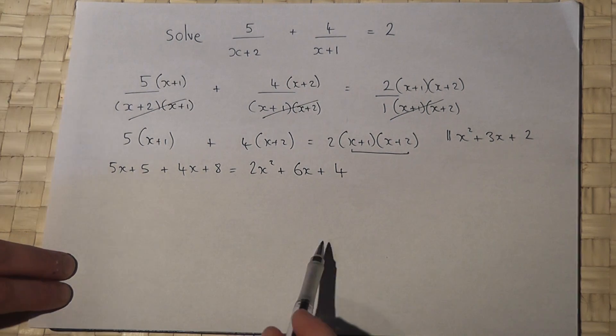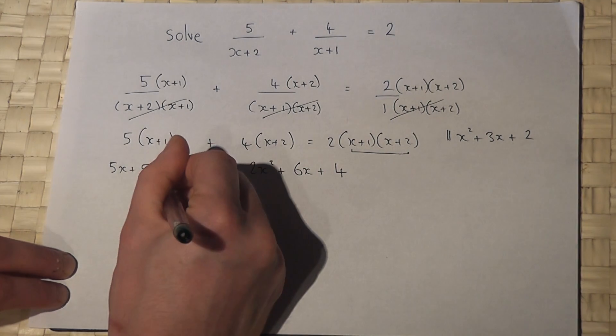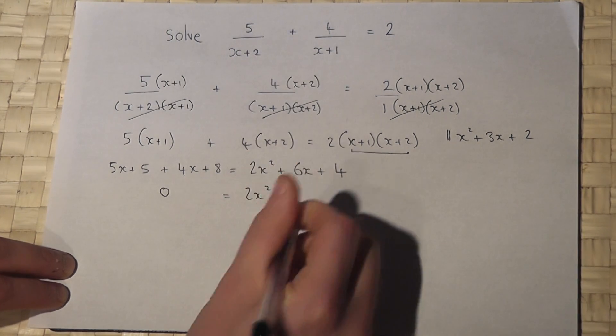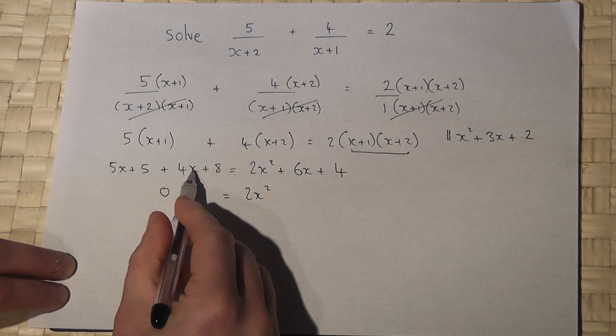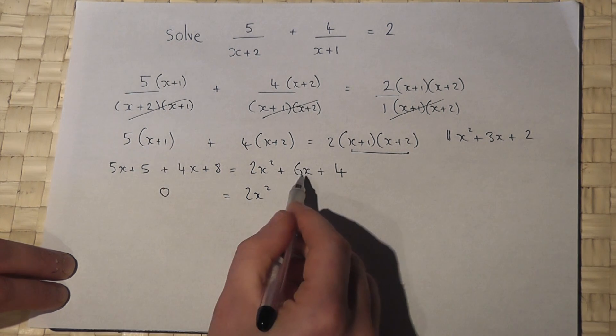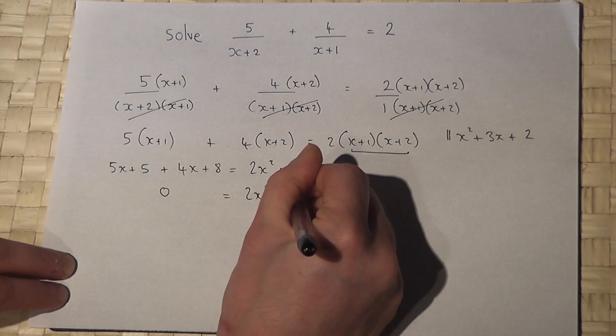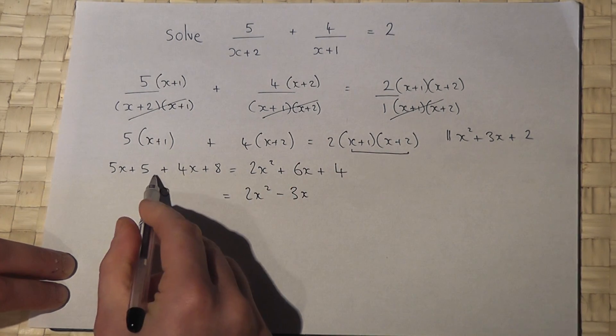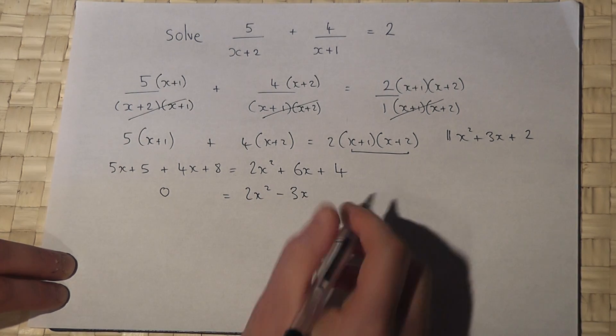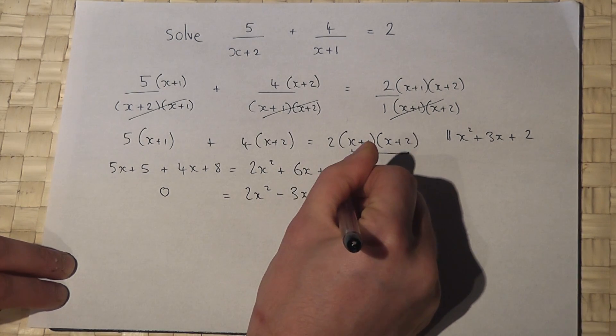So this becomes a quadratic equation, which I want to equal to 0. So I've got 2x squared, I've got a 5x and a 4x is 9x. So I'll take away 9x from both sides. 6x take 9x is minus 3x. 5 plus 8 is 13. I'll take away 13. 4 take away 13 is minus 9.